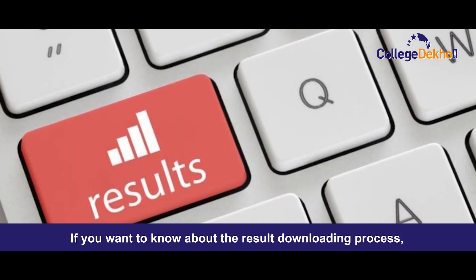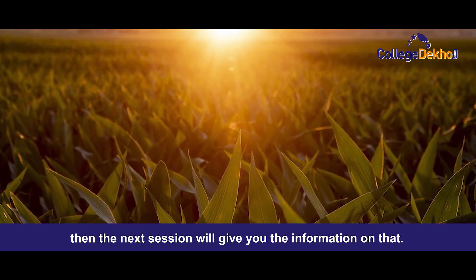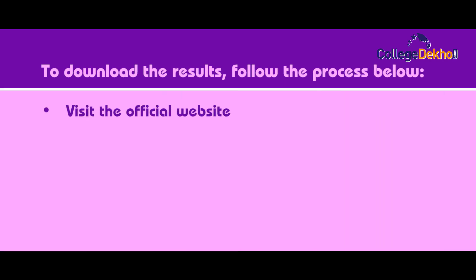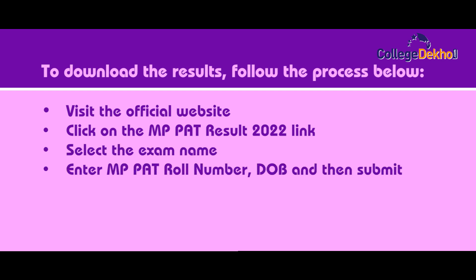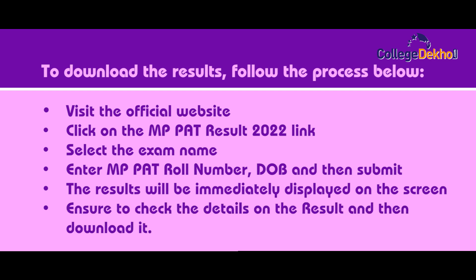If you want to know about the result downloading process, the next section will give you information on that. To download the results, follow the process below: visit the official website, click on the MPPAT result when you enter the link, select the exam name, enter your MPPAT roll number, and then submit. The results will be immediately displayed on the screen. Ensure to check the details on the results and then download it.